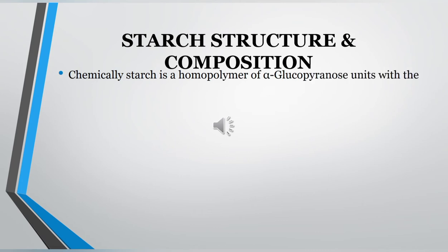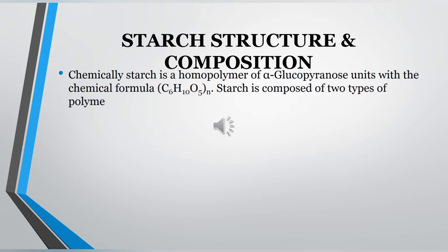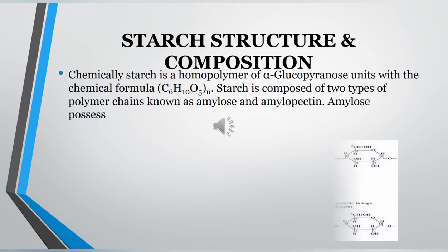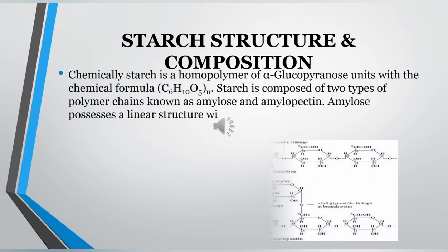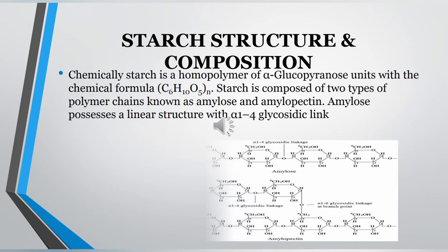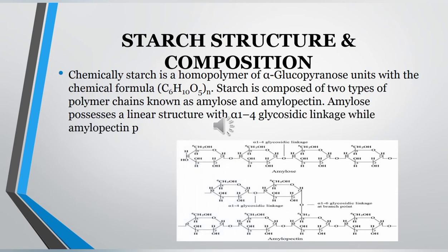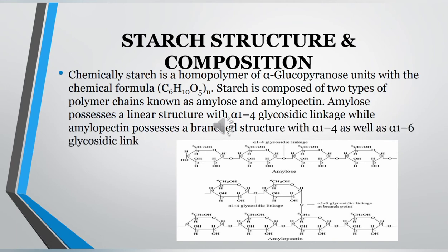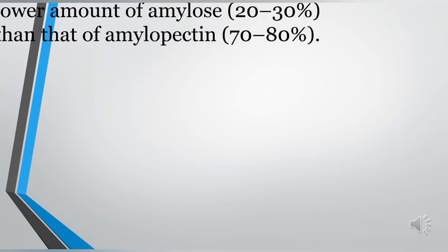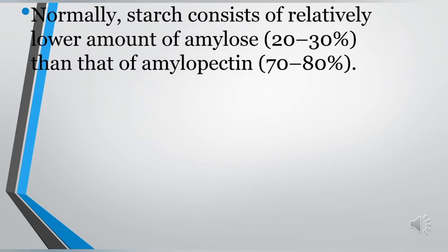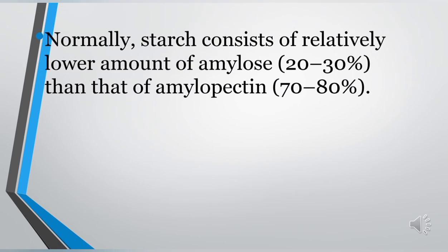Chemically, starch is a homopolymer of alpha-glucopyranose units with the chemical formula (C6H10O5)n. Starch is composed of two types of polymer chains known as amylose and amylopectin. Amylose possesses a linear structure with alpha-1,4 glycosidic linkages, while amylopectin possesses a branched structure with alpha-1,4 as well as alpha-1,6 glycosidic linkages.